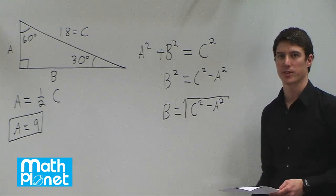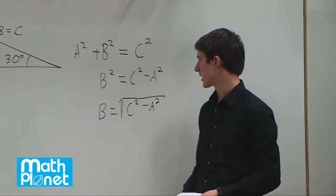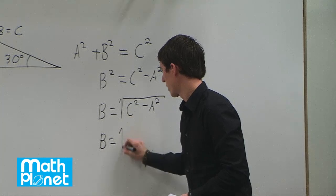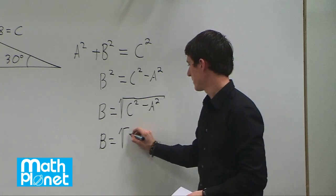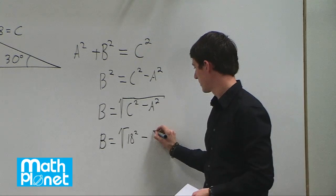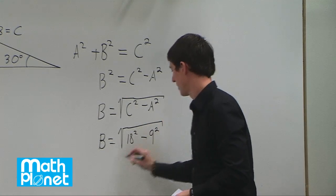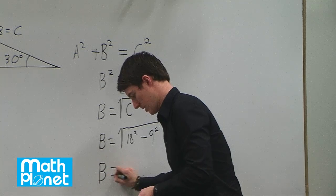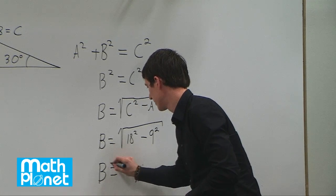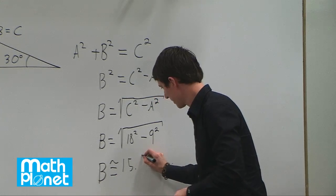So this will give us the length of B. And then at the end here we can just plug in our values of C and A. So B is equal to the square root of C is 18, so we have 18 squared minus 9 squared. And then when we work that out, we can find that B is approximately equal to 15.6.